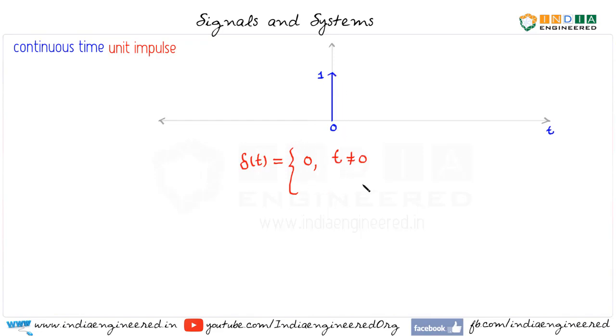So what we do is instead of defining it directly here, we will write it in the form of an integral. We know that area under the curve is given by integral minus infinity to infinity δ(t) dt. This is the area under the curve, and it has to be one. So this is how a unit impulse is normally defined.